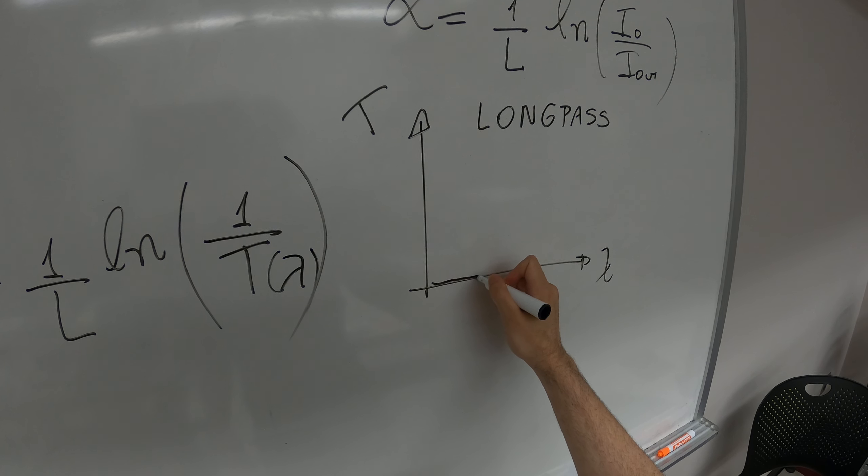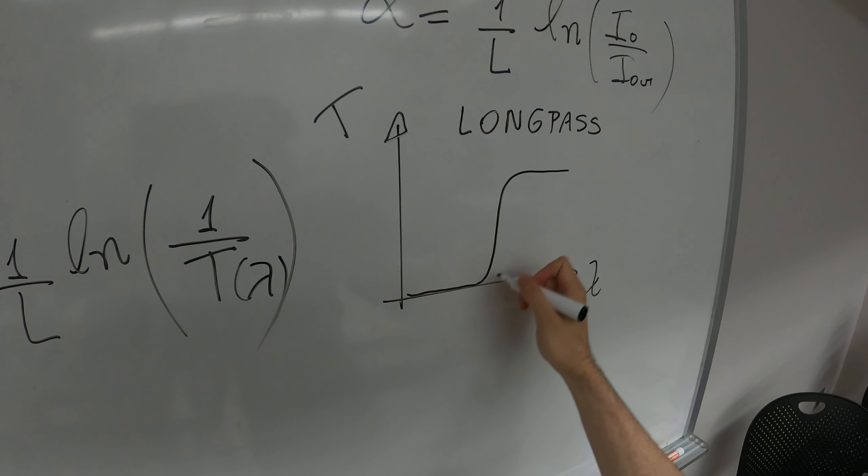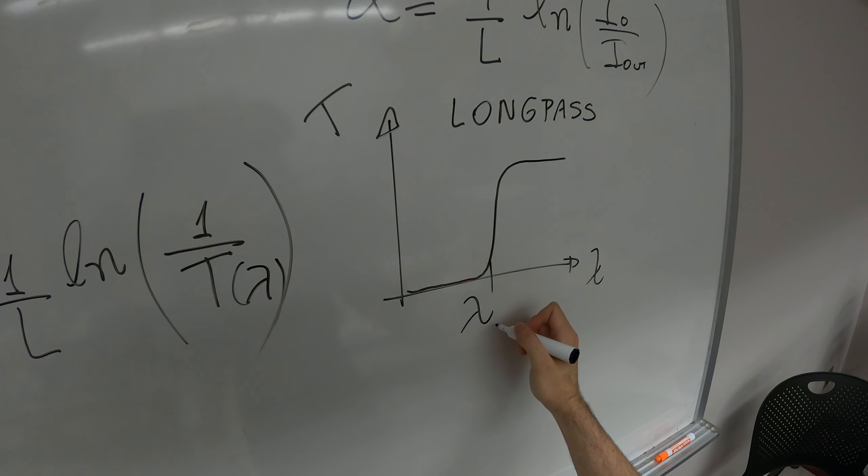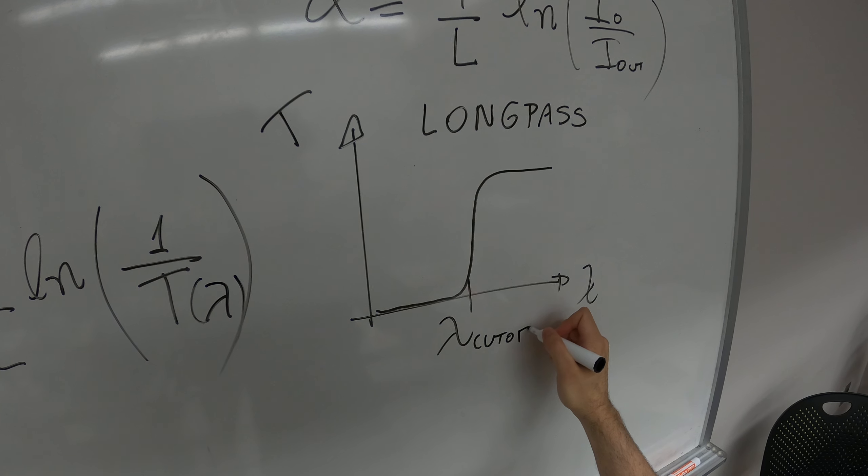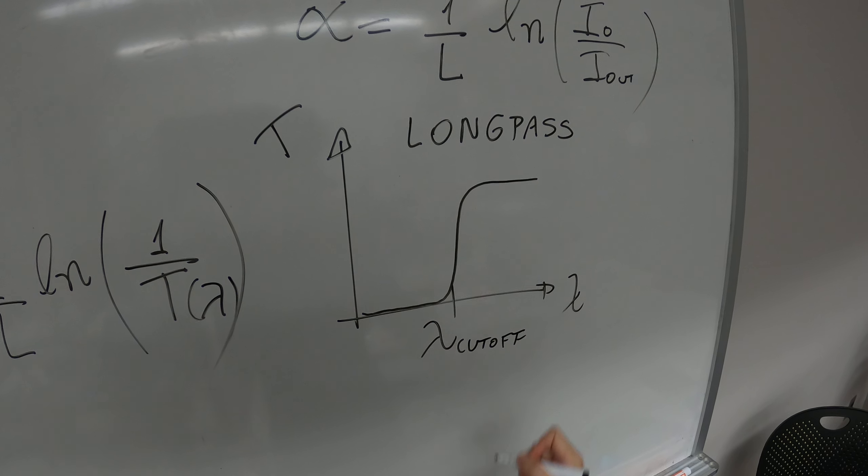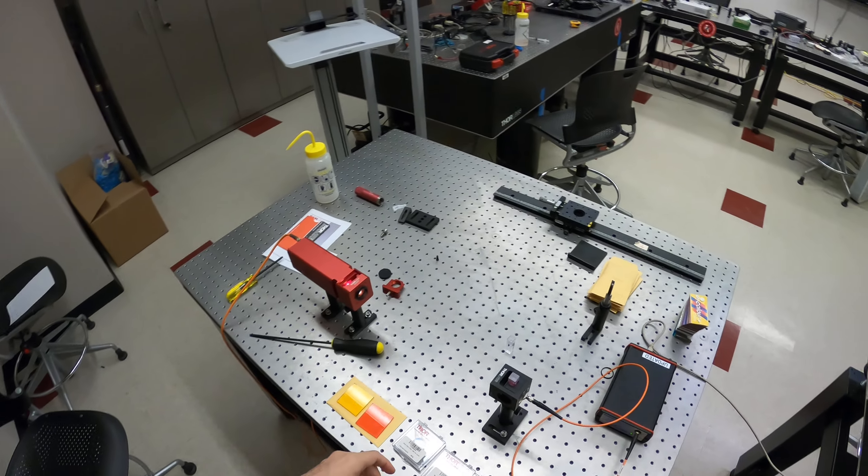you block this area, the transmittance is zero, and after a wavelength that we call it cutoff, light is transmitted by this filter.